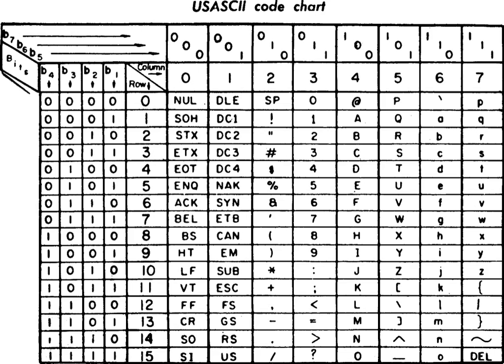ASCII, abbreviated from American Standard Code for Information Interchange, is a character encoding standard for electronic communication. ASCII codes represent text in computers, telecommunications equipment, and other devices. Most modern character encoding schemes are based on ASCII, although they support many additional characters.